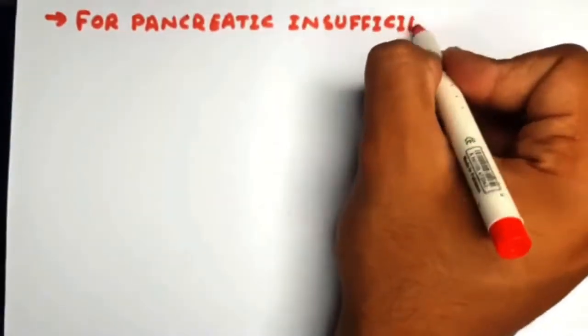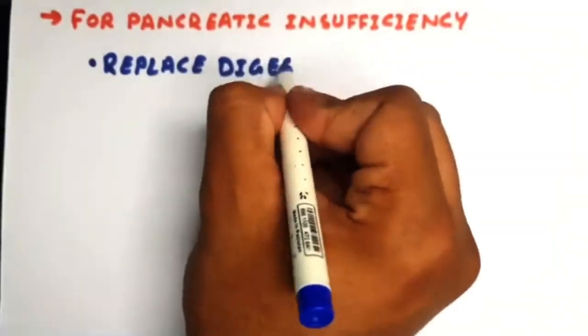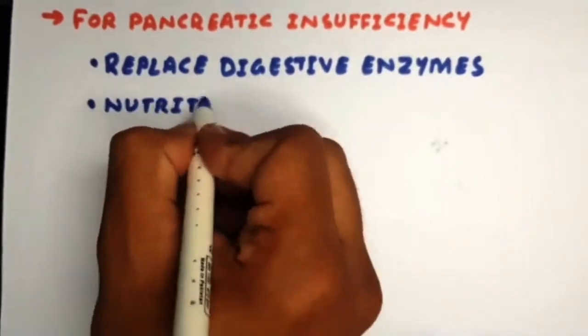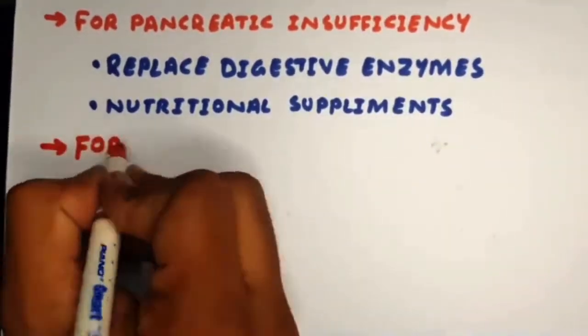For pancreatic insufficiency, we replace digestive enzymes and give nutritional support like MCTs. For diabetes, we give insulin replacement.